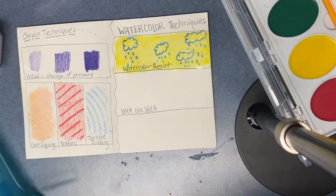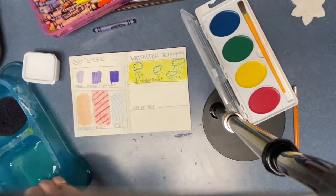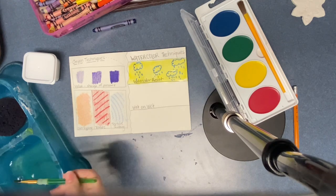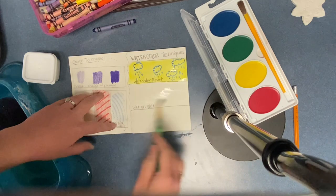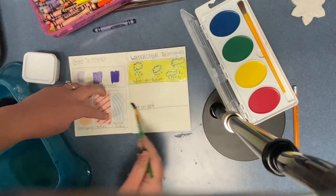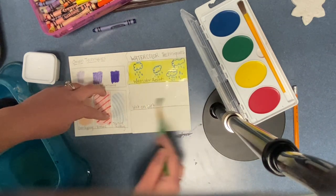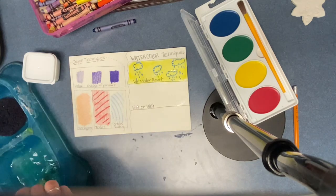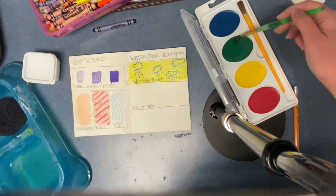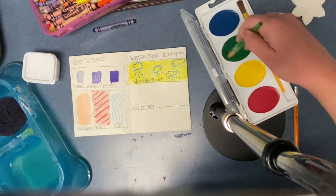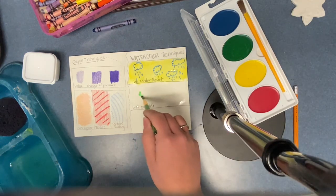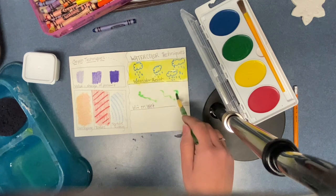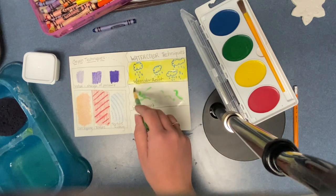So we're going to take our clean paintbrush and we're going to use some water to wet down this section of our techniques book. Once it has that shiny look, that's how you know that the paper is wet. Next, you can choose any color you would like and you're just going to kind of do some little designs. However you would like this to look.